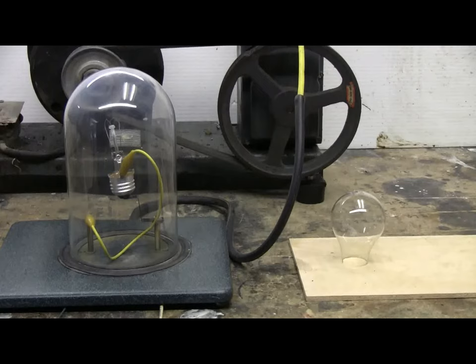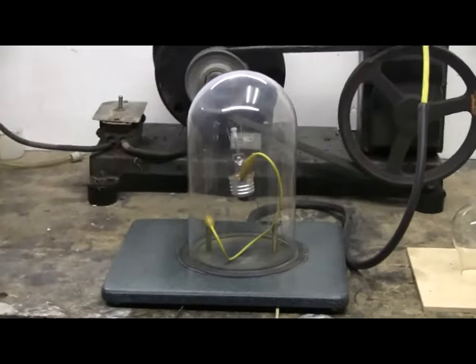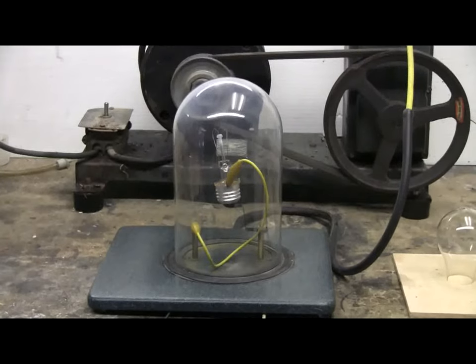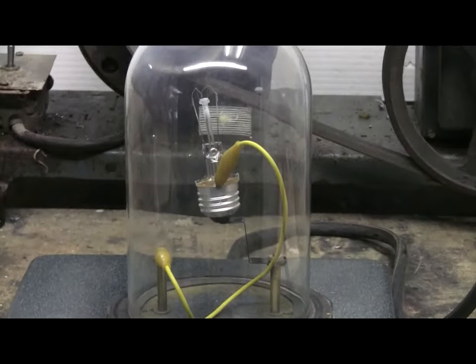For this video, I've taken a 60-watt incandescent light bulb with a clear envelope and cut the envelope off the bulb. I've then taken the bulb assembly and put it into my vacuum jar.